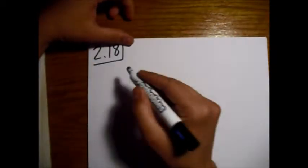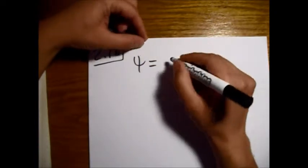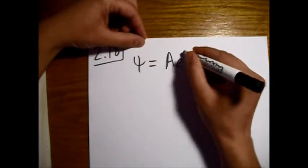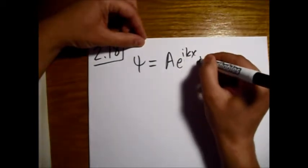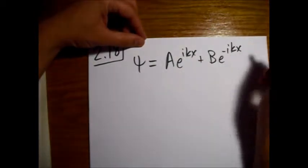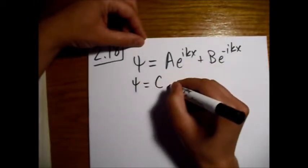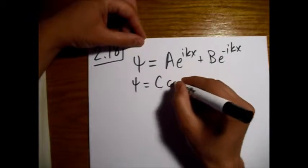What we're going to do is show that there are two ways of writing the same thing, one of which is in terms of complex exponentials, and the other one is in terms of trigonometric functions.